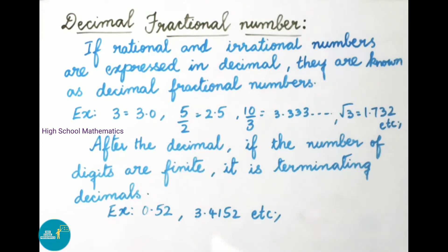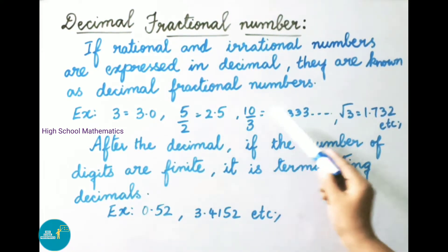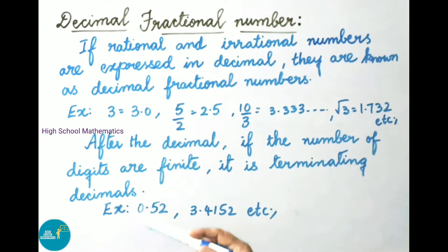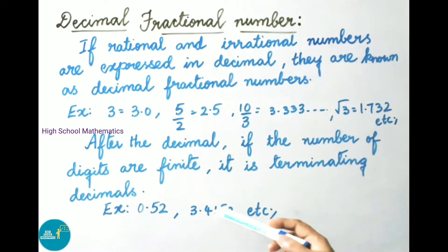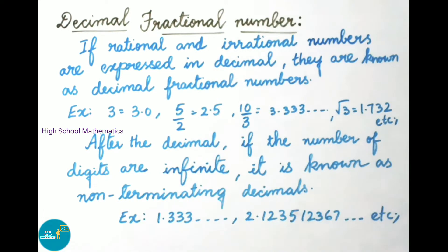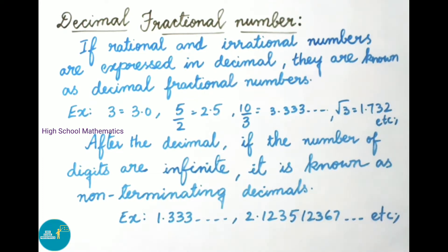After the decimal, if the number of digits are finite, then they are called as terminating decimals. Examples: 0.52 and 3.4152 — here the digits after the decimal are finite. If the number of digits after the decimal are infinite, it is known as a non-terminating decimal. Examples: 1.333... and 2.123512367... are non-terminating decimals.